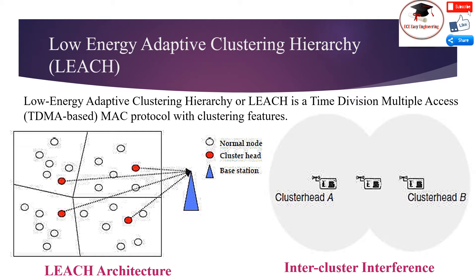This decision takes into account when the node last served as cluster head, such that a node that has not been a cluster head for a long time is more likely to elect itself than one serving just recently. The protocol is round-based — all nodes make the decision whether to become a cluster head at the same time, and non-cluster head nodes associate to a cluster head subsequently. Non-cluster heads choose their cluster head based on received signal strength. After a cluster has been formed, each cluster head picks a random CDMA code for its cluster, which it broadcasts and which its member nodes must use.